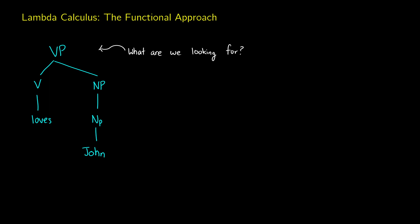One important thing here is with this verb phrase 'loves John.' The question is, at this point, what are we looking for still to make this a complete sentence? Well, what we're looking for is a subject. If we were to translate just the VP — we have loves, and we know J is the object — but we're looking for some subject. If the subject is a proper name, we could put a constant in there like Mary. If it was a quantified noun, like 'everybody loves John,' then we'd say for all X, X loves John.